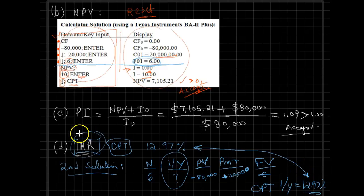So again, based on the IRR methodology, because 12.97 percent exceeds the required rate of return of 10 percent, based on IRR, again, we would say that the project is acceptable.